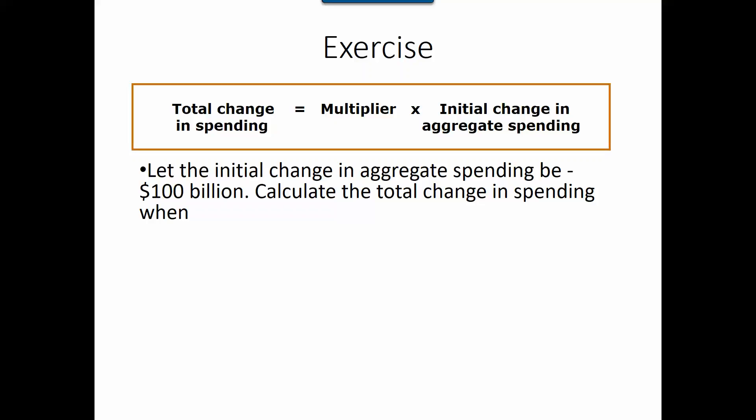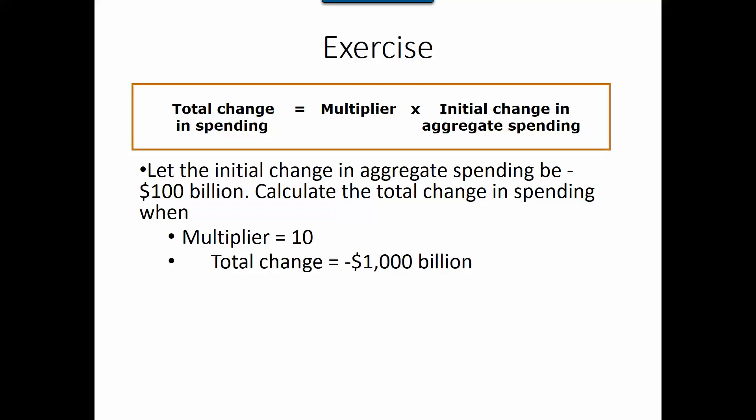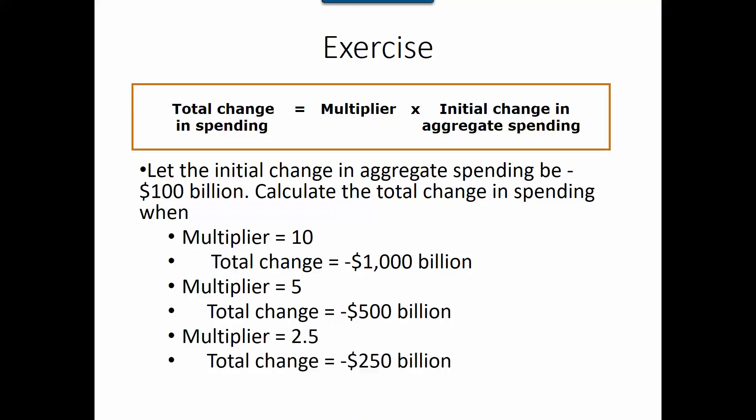Now let's look at a different scenario. If the initial change in aggregate spending is $100 billion and the multiplier equals 10, then 10 × $100 billion gives a total decrease of $1,000 billion. If the multiplier is 5, then 5 × $100 billion gives a decrease of $500 billion. If the multiplier is 2.5, the total change is a decrease of $250 billion. I hope this video helps you understand why and how this formula comes from, and how to apply the multiplier to find the total change in spending given an initial change in aggregate spending.